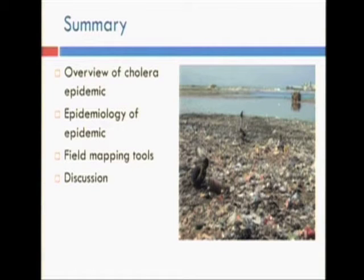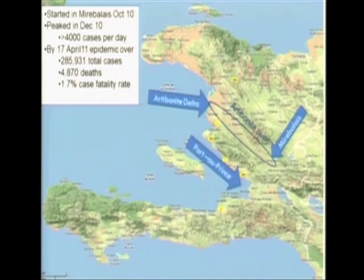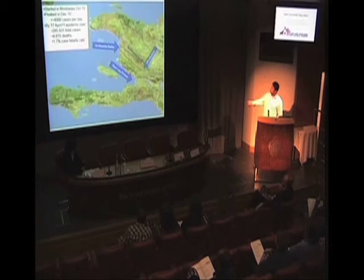You can see pictures of people publicly defecating on the beach. This is a map of Haiti with the capital. The outbreak started in October 2010 and it moved downstream of the river Artibonite up to the Artibonite Delta and spread across Haiti, resulting in a total of nearly 300,000 cases and almost 5,000 deaths.